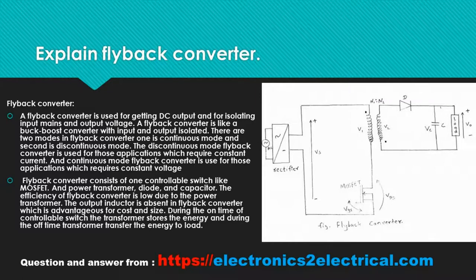The discontinuous mode flyback converter is used for applications which require constant current, and continuous mode flyback converter is used for applications which require constant voltage.